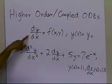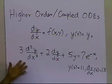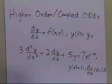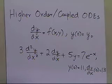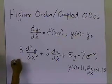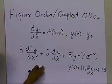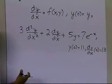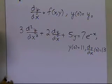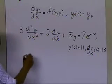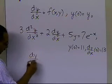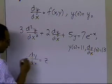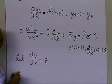It cannot be written in the first-order form directly, so we have to figure out how to solve a second-order or higher-order differential equation. The way to do it is to somehow reduce it to a first-order differential equation so we can use Euler's method and the Runge-Kutta methods. One way to do this is to let dy/dx equal to z.